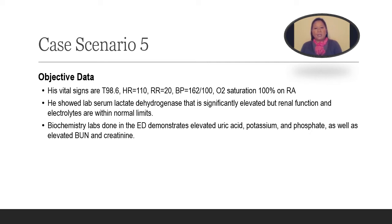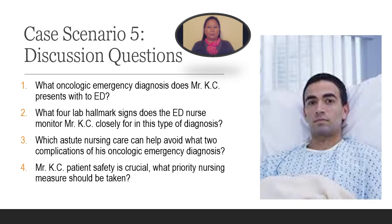His biochemistry labs done in the ED demonstrate an elevated uric acid, potassium, and phosphate, as well as an elevated BUN and creatinine. Now let's once again take 10 to 15 minutes to do the discussion questions on case scenario five. Please press pause.